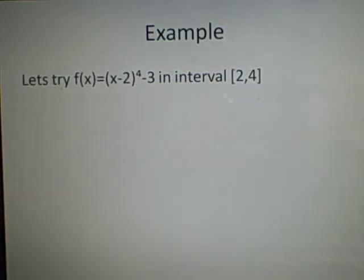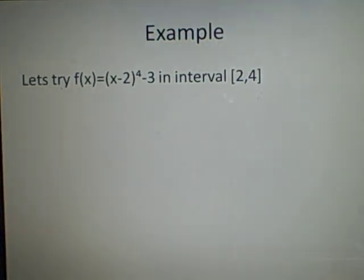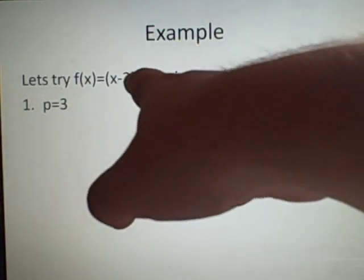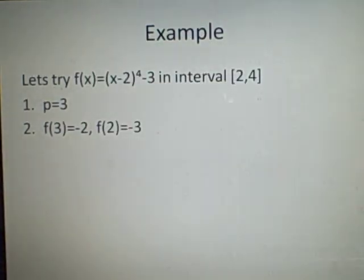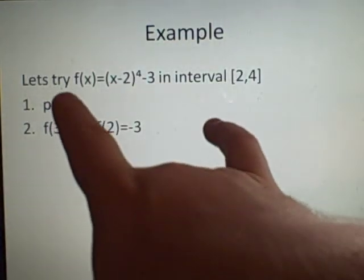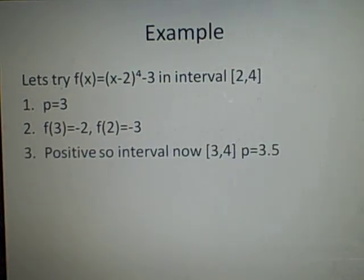As an example — we'll use this equation for all our examples — (x minus 2) to the power of 4 minus 3, in the interval [2, 4]. The first midpoint value, the first bisection, is p equals 3. We put f(p) in: 3 minus 2 to the power 4 is 1 minus 3, which is minus 2. We also find f(a), which is f(2), giving minus 3. Multiplying them gives a positive, so we know the root is in the second half, between 3 and 4. Our next value for p will be the halfway point, 3.5.